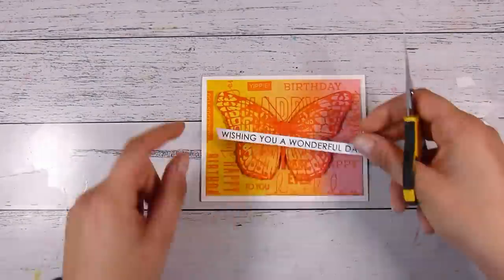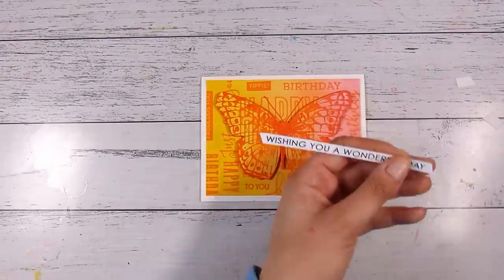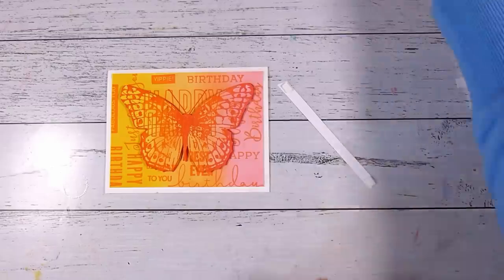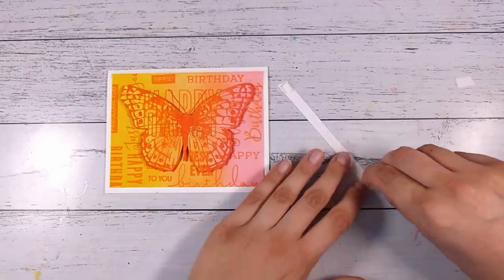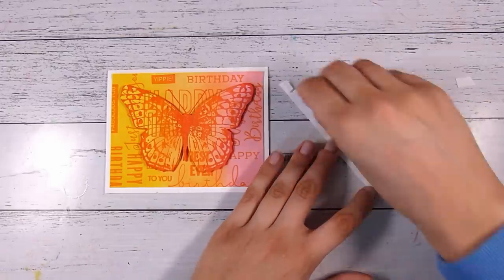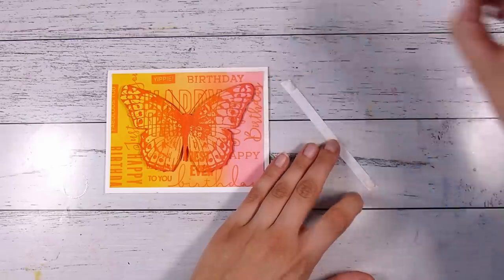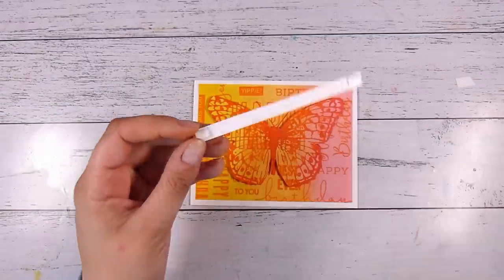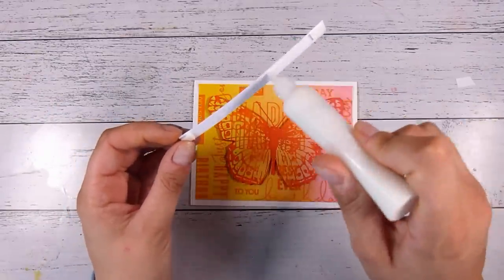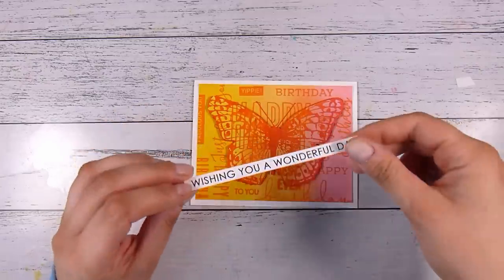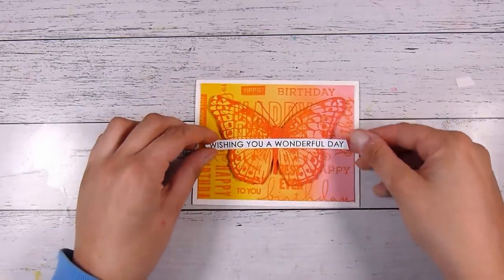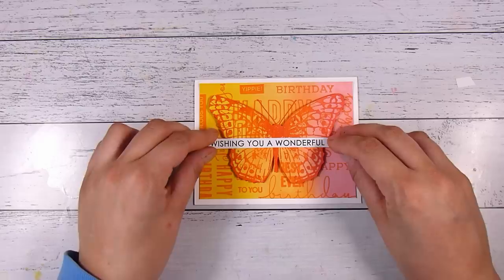This one says 'Wishing you a wonderful day,' and this is more of a happy birthday because obviously in the background it says 'Happy Birthday,' so I thought this was fairly obvious. I'm popping a tiny little bit of foam tape on each end, and this is going to go straight across the middle of the butterfly. I need to add a little bit of liquid glue, and this will stick down to the butterfly and keep the sentiment in place as it goes through the mail as well.